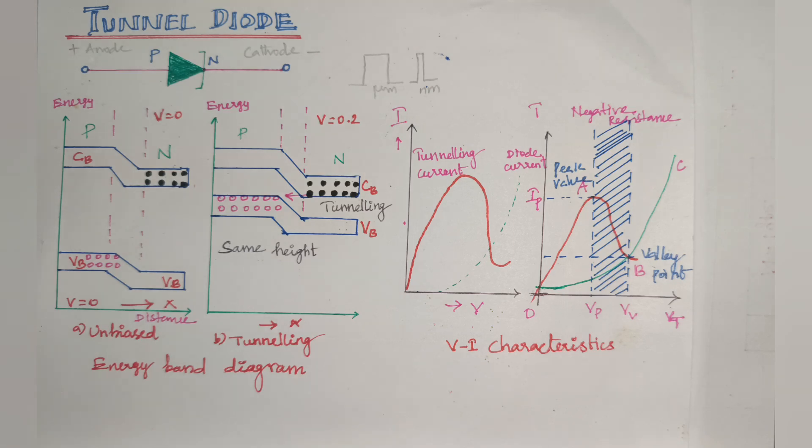A tunnel diode is a simple PN junction diode in which both N-type and P-type are heavily doped with impurities. Normally in a PN junction diode, we dope from 10 power 8 to 1 atom. But in the tunnel diode, it is 1000 times the PN junction diode, 1000 times heavily doped.